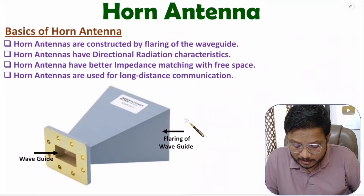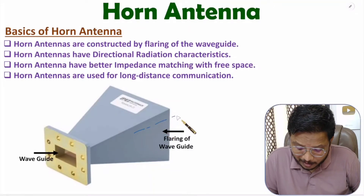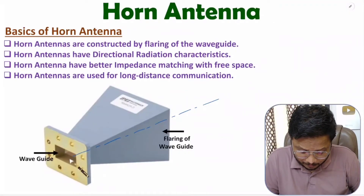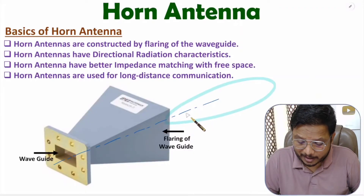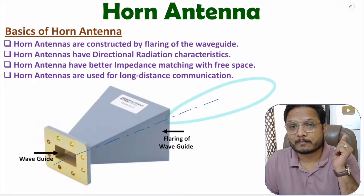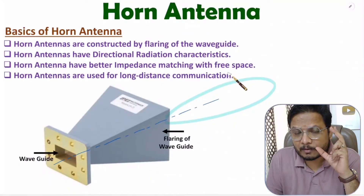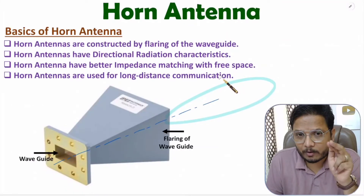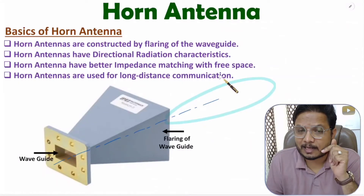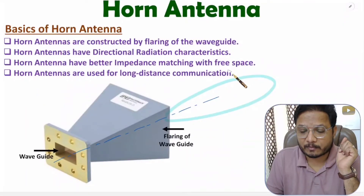Horn antenna has directional radiation characteristics. If you observe the radiation pattern, the major lobe is formed in the direction of the axis of the horn. Horn antenna also has better impedance matching with free space. Since we need to radiate power in free space, the antenna must have impedance matching to achieve directional radiation characteristics.